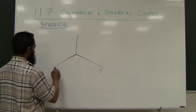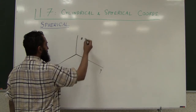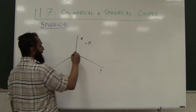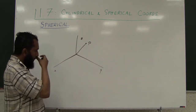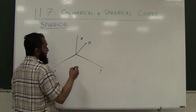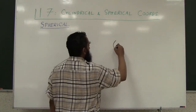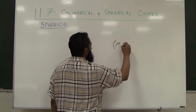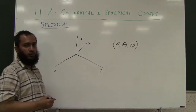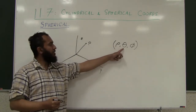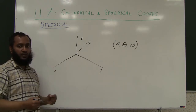You have the y, x, and z axes, and here is the point P. You make a line from the origin to point P. In the spherical coordinate system, three coordinates — rho, theta, and phi (Greek letters) — describe the location of the point.